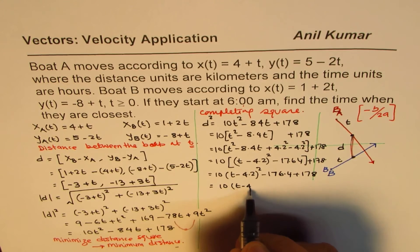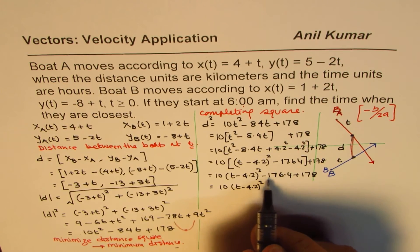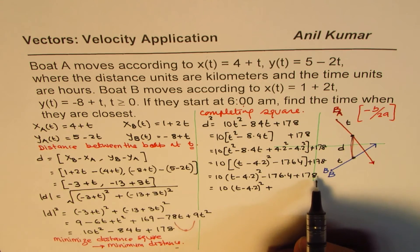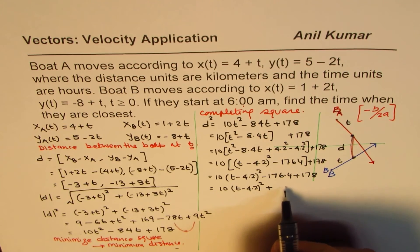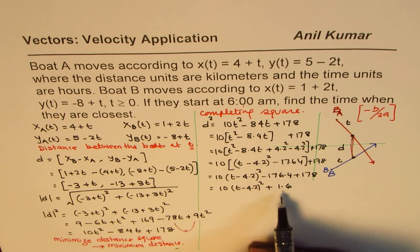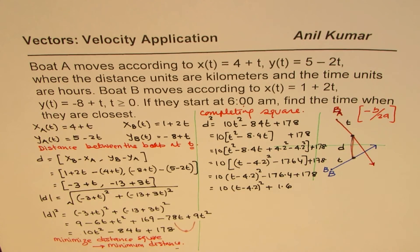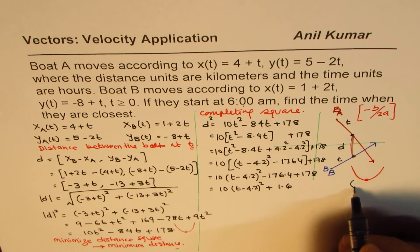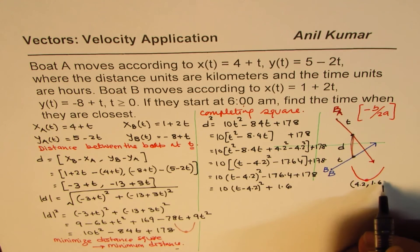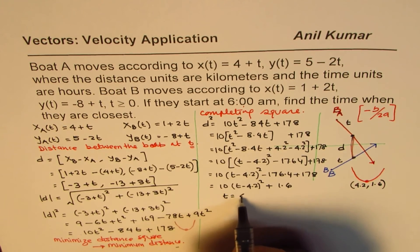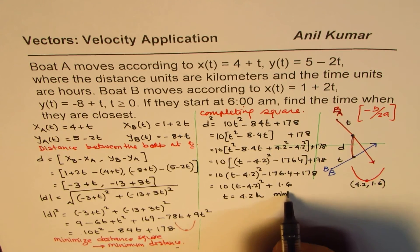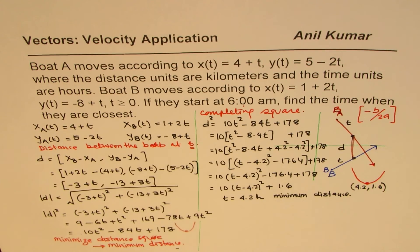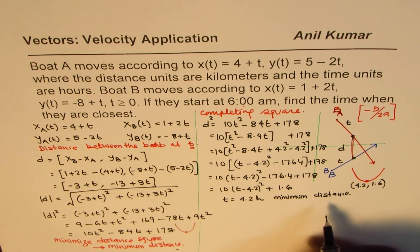One more step. 10(t - 4.2)² and this minus that plus gives us 1.6. So that's the equation. Clearly, we have a parabola here showing the distance kind of like this. And this point is what you see as 4.2 is the t value and 1.6 is the distance between them. So at t = 4.2 hours, we have minimum distance. I hope the steps are absolutely clear. Feel free to write down your comments and share questions if you really need to get answers.